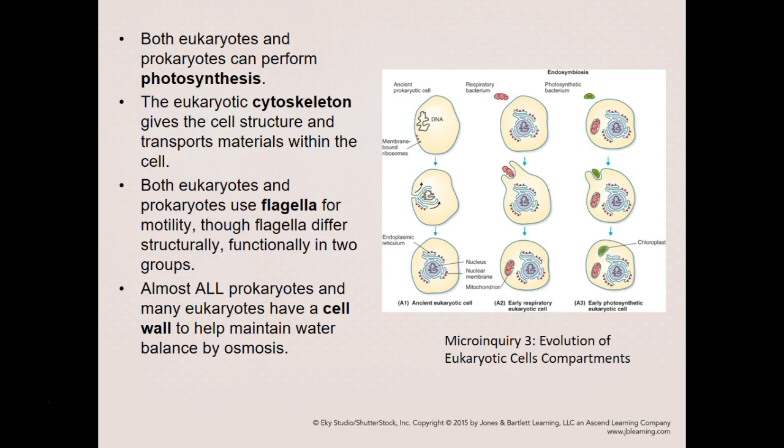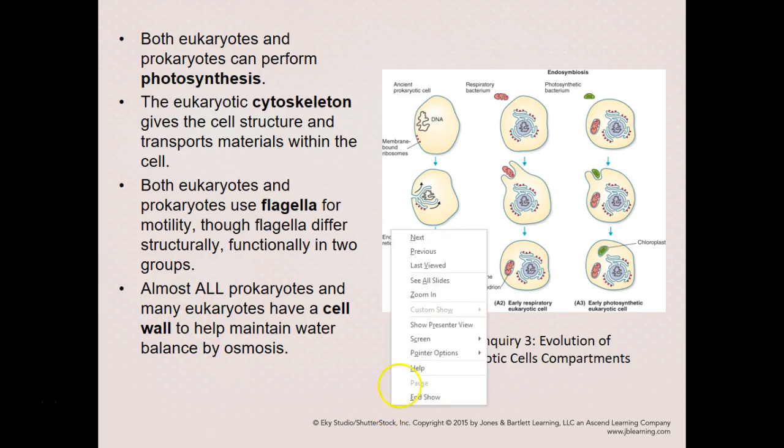This endosymbiotic theory was developed by Lynn Margulis in the 1980s. Basically, what she states is that large bacterial cells took in smaller bacterial cells, and instead of breaking them down for food or nutrients, they used each other for mutual benefit — forming a mutualistic symbiotic relationship where both cells survived. I'm going to show you a TED-Ed talk about this — it's only a five-minute video.